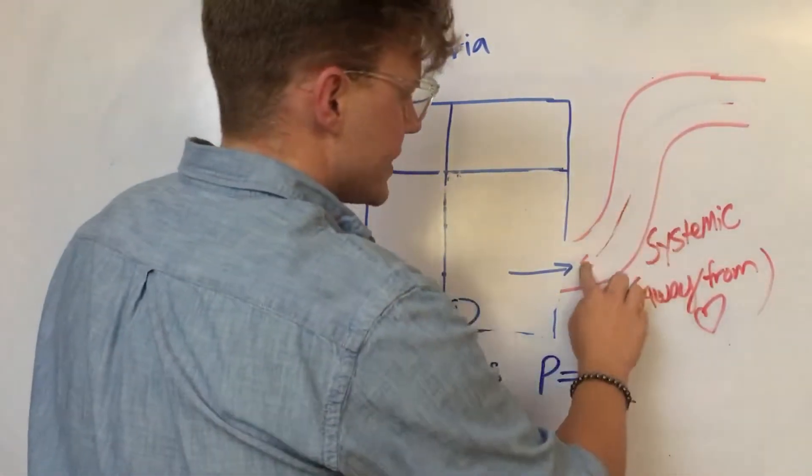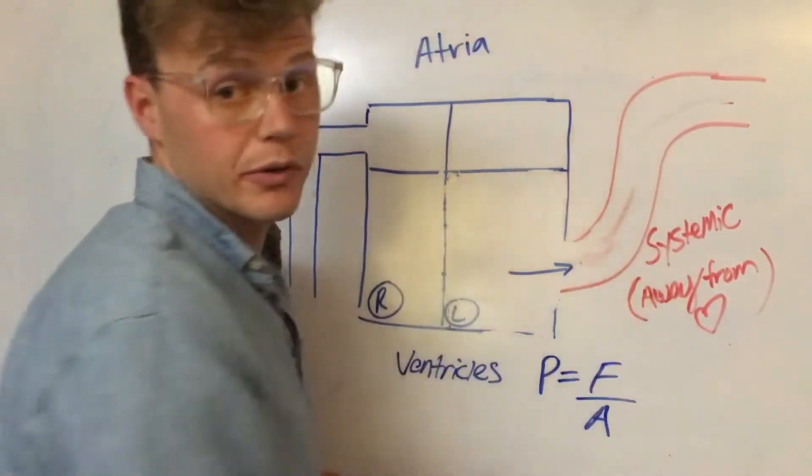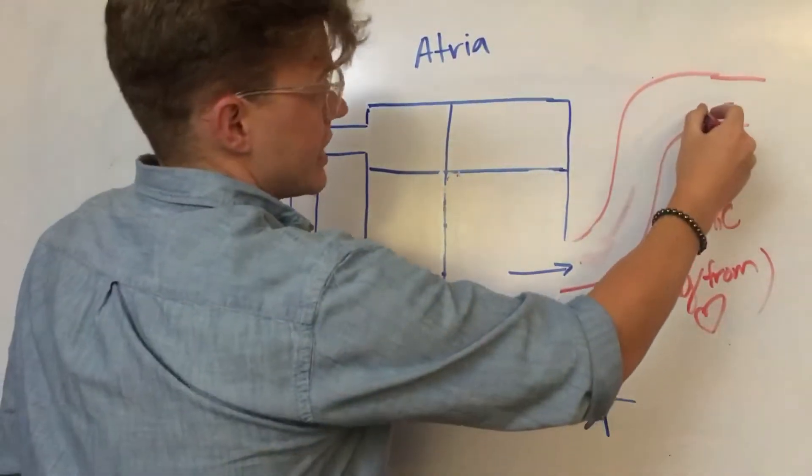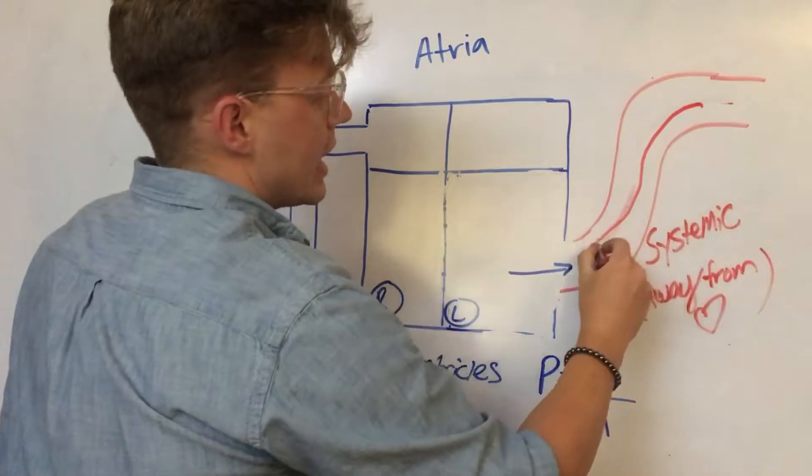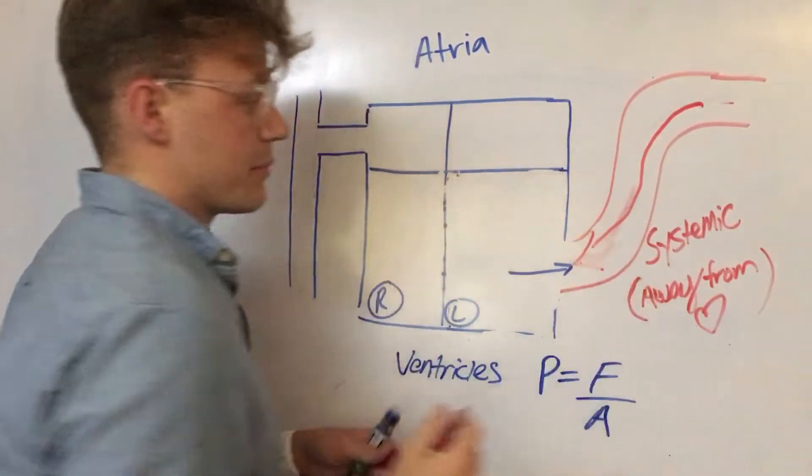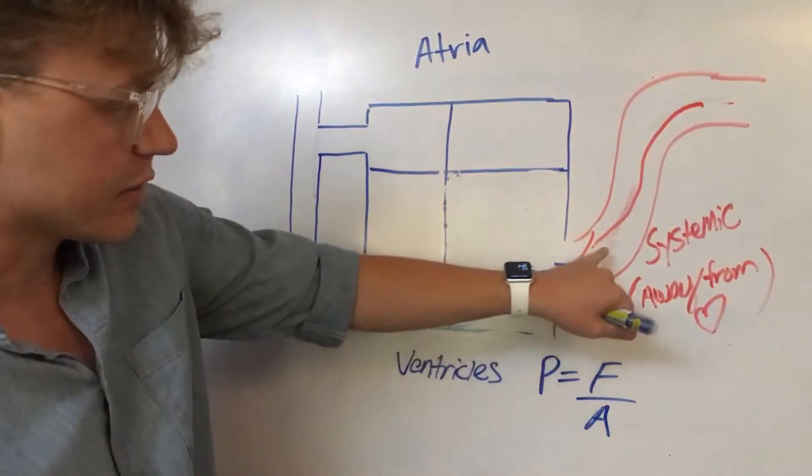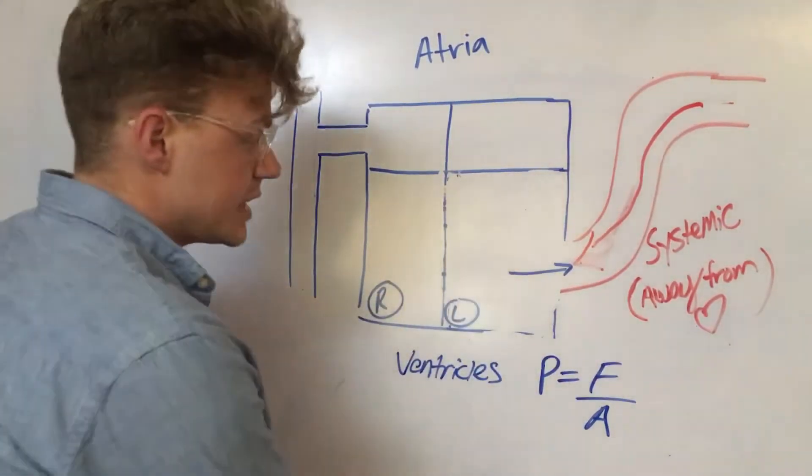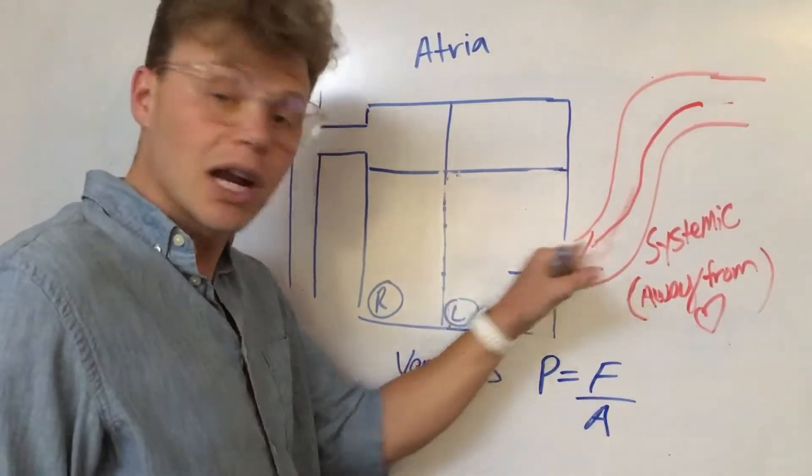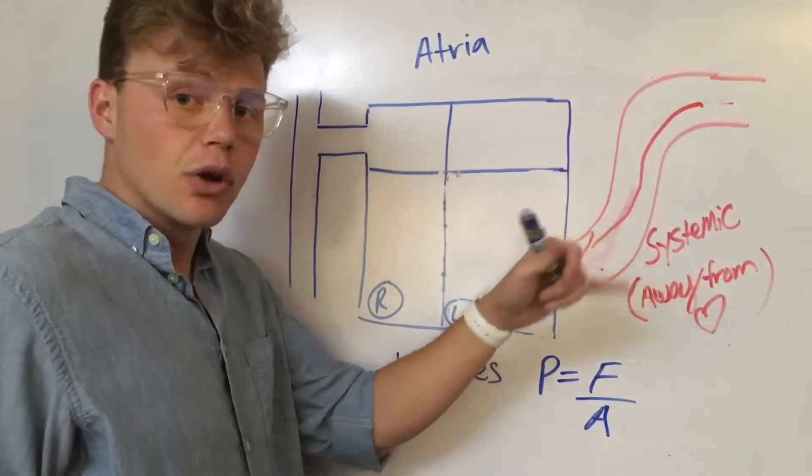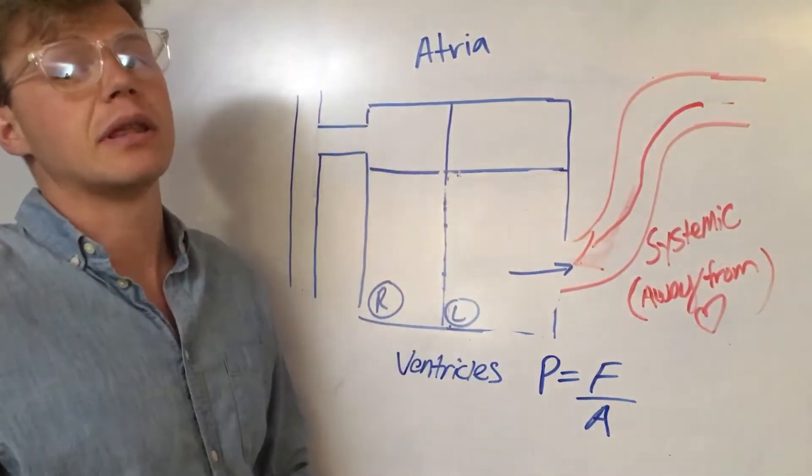But what happens when you have someone, one consequence, remember there's many. Let's just say this person has way uncontrolled hypertension. I'm drawing this vector that is way bigger than this. Your measly little left ventricle right here cannot overcome that pressure. So what it has to do is it has to hypertrophy the muscles.